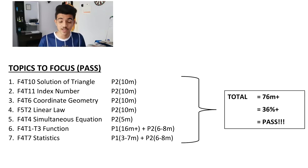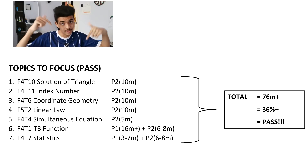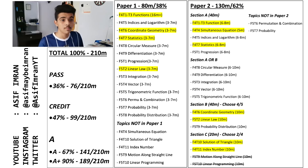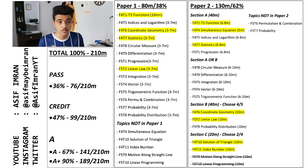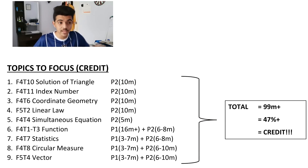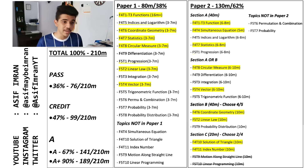I've also made another list so you can see it more easily — the link is also in the description. For credit, focus on all the same topics mentioned before, but now we're going to continue adding Section B topics that appear in both Paper 1 and Paper 2 that are slightly harder: circular measure and vector. And that's literally all you need for credit.